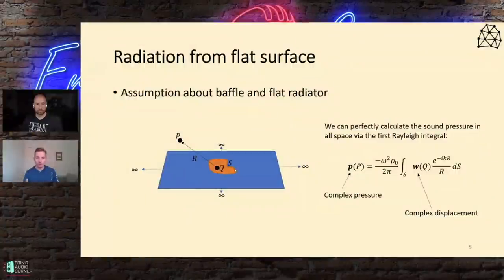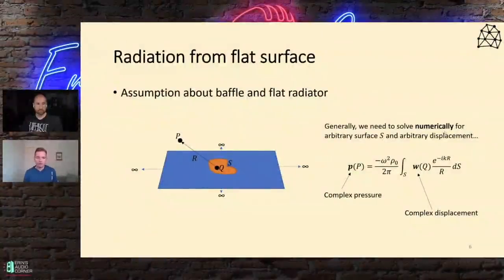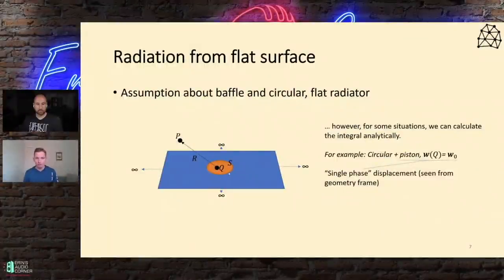By isolating different effects and looking at a flat piston radiator, the shape can actually be anything — even several separated surfaces. If you know the surface mathematically and know the vibration at all points on it, you can find the pressure with phase at any point, near field or far field. For what we're trying to do, it's better to avoid numerical calculations and use closed-form expressions you could plug into Excel — for that, we limit ourselves to circular or rectangular shapes.